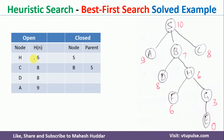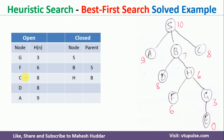We select H as the best node and place it on the closed list. C, D, and A are already on the open list. H is not a goal node, so we expand it. Expanding H gives F and G, which are added to the open list. We rearrange the open list so that nodes are in increasing order of heuristic values. After rearranging, G has the minimum heuristic value.